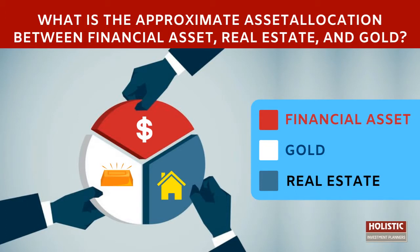Can you give a generic answer for an average Indian — what is the approximate percentage of asset allocation between financial assets, real estate, and gold? And within financial assets, what is the best possible allocation among equity, debt, and FD?